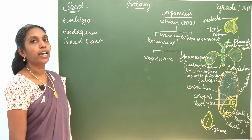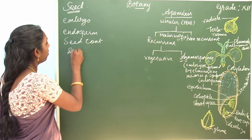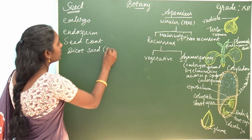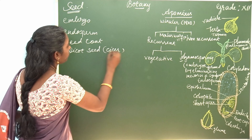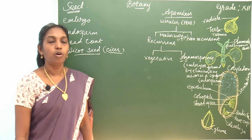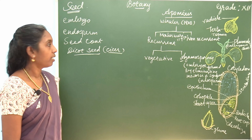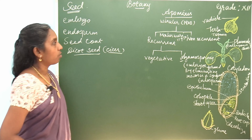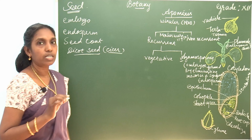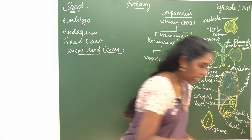Let's discuss the dicot seed and the monocot seed. There is an example of dicot seed known as syser. The structure of syser consists of the embryo, endosperm as well as the seed coat.